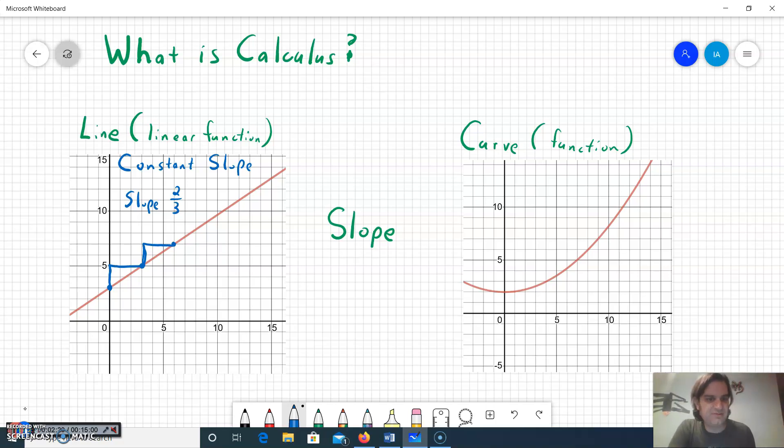And no matter where I'm at on the graph, if I come up here to 12, 11, I can go over to 15, 13, it also goes up 2 over 3. So lines have constant slope.